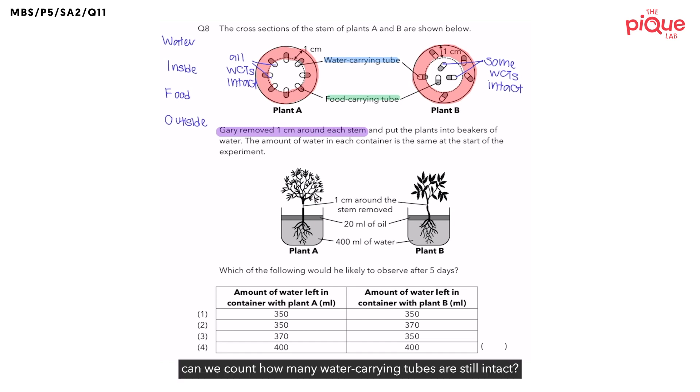Now, for plant B, can we count how many water-carrying tubes are still intact? There's 1, 2, and 3. Therefore, for plant B, there's only 3 water-carrying tubes still intact. Now, what about plant A? Let's count. 1, 2, 3, 4, 5, 6, 7, 8. So, for plant A, there are 8 water-carrying tubes still intact. Now, between plant A and plant B, which plant has more water-carrying tubes still intact? It is plant A. So, let's write this down. Plant A has more water-carrying tubes.